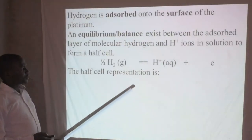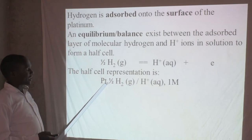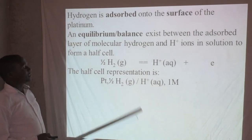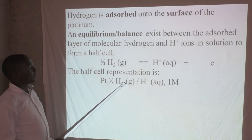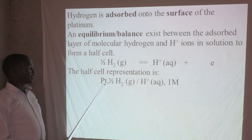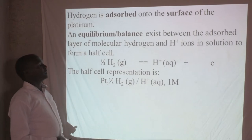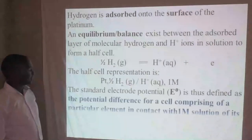The half-cell representation is as follows. We have platinum, which is an inert electrode — it does not ionize. Just as in other half equations where the metal acts as the electrode and also ionizes, here platinum is not ionizing. So we include that notation. We have half a mole of hydrogen gas, one mole of hydrogen ions, in a one molar solution. This is the cell representation of the hydrogen half cell acting as a reference electrode.